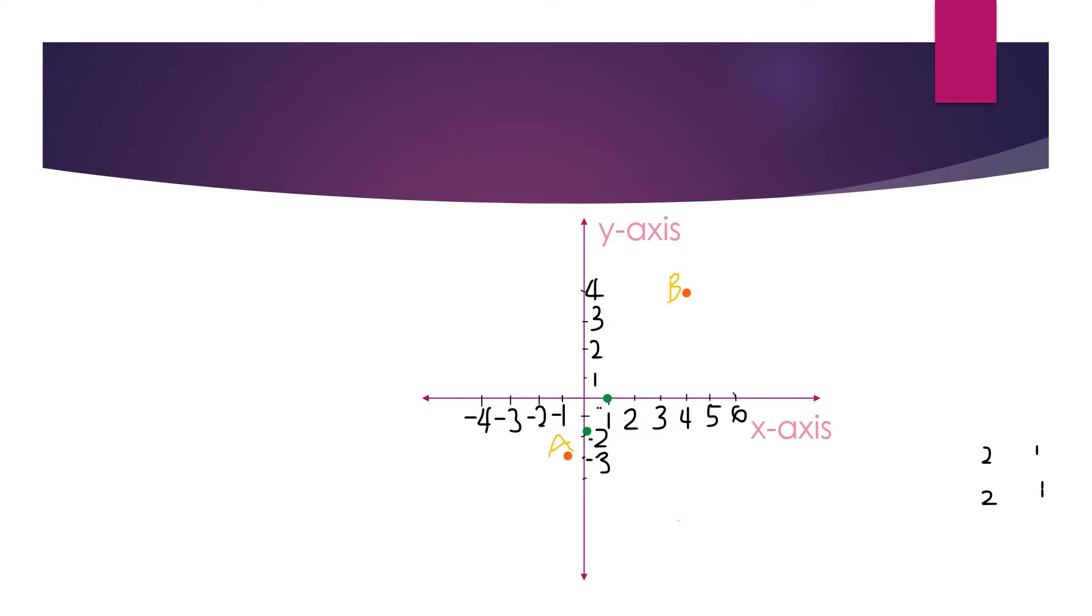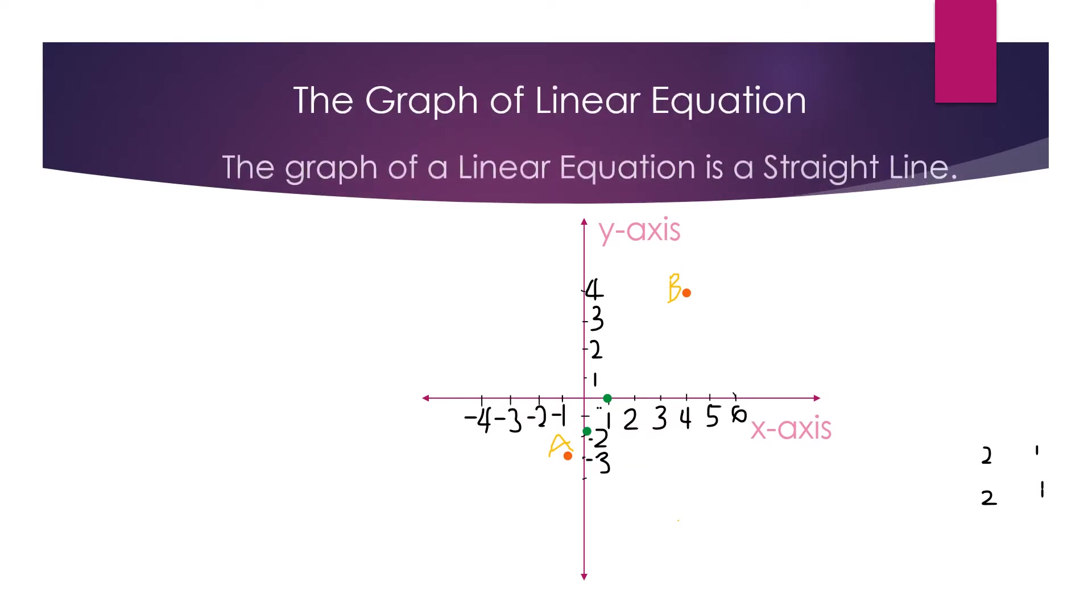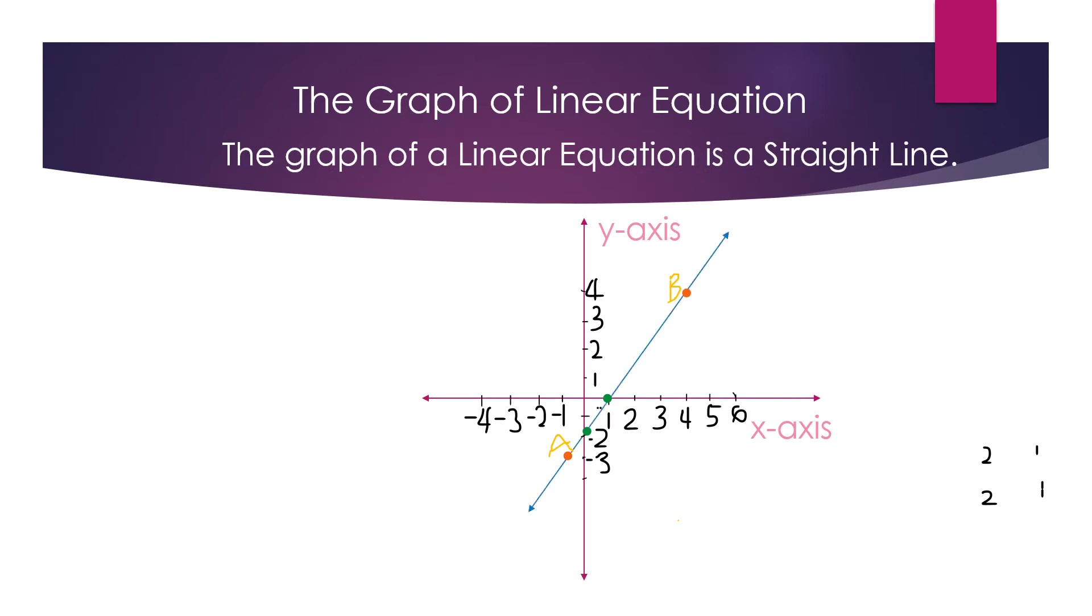I'll show you the graph of a linear equation, and then what we're going to do is we're going to get the slope and derive the formula slope-intercept form of equation of the line. So, this is the graph. I have here point A and B, and then the coordinates of B is 4,4, and the coordinates of A is negative 1, negative 3.